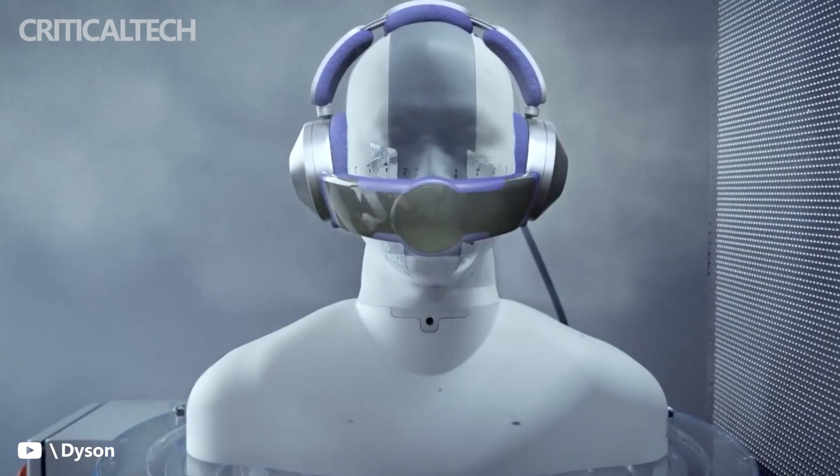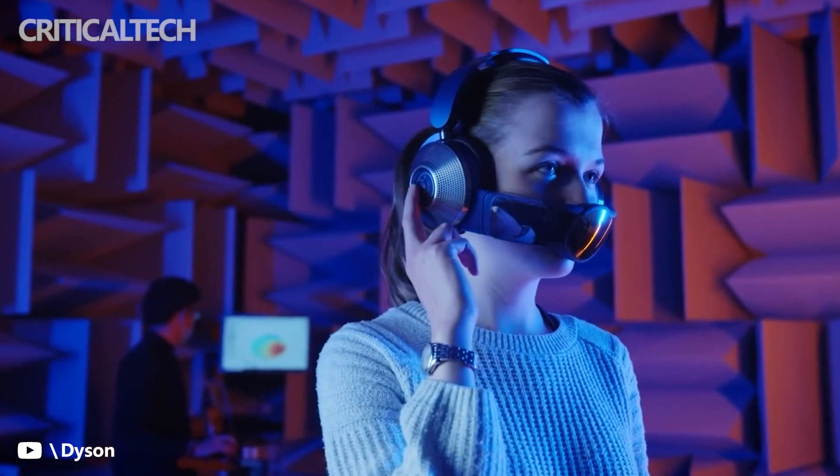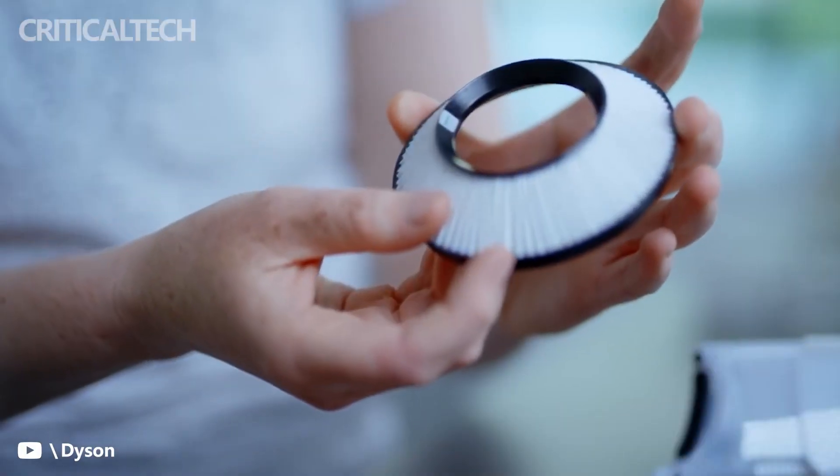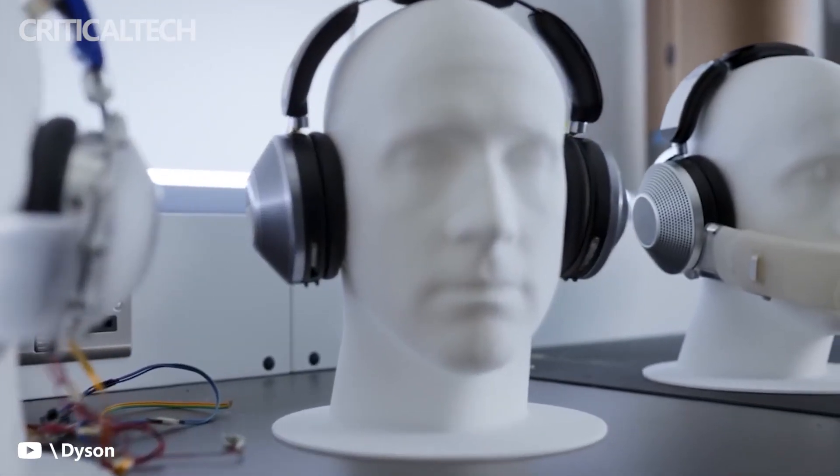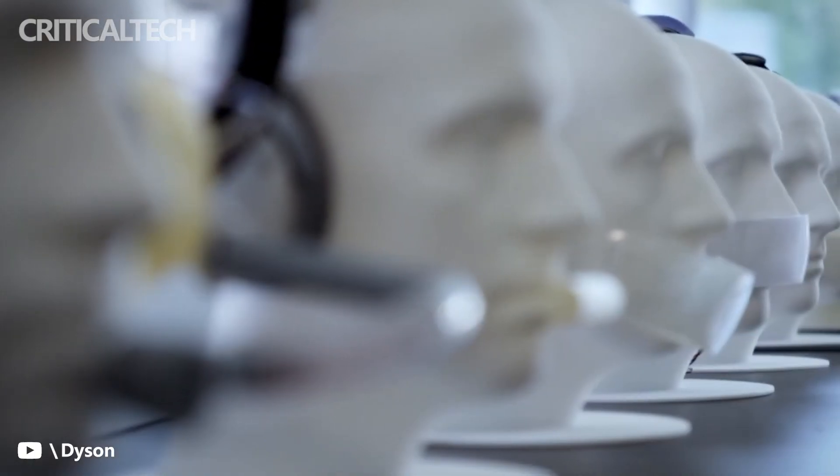You see, this product, dubbed the Dyson Zone, has a removable attachment that is a miniaturized version of Dyson's air purifiers for the home. The system pulls air from the ear cups of the headphones, pushes it through a two-stage purifier that uses electrostatic media to attract particles from the air.